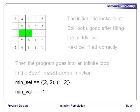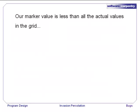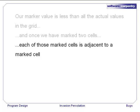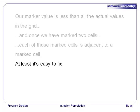Inside this loop, minset contains the points 2,2 and 1,2, the two cells shown in green above, and minval is minus 1. Uh-oh, that's the problem. Our marker value, minus 1, is less than any of the actual values in the grid, and once we've marked two cells, each of those marked cells is adjacent to another marked cell. Well, at least this one is going to be easy to fix.